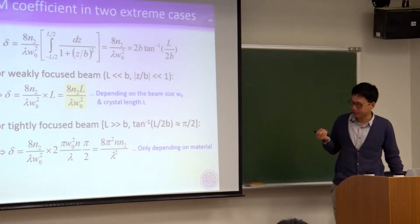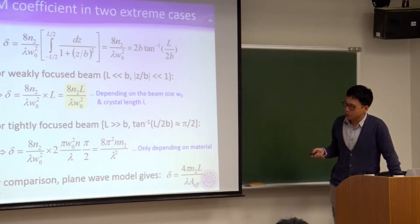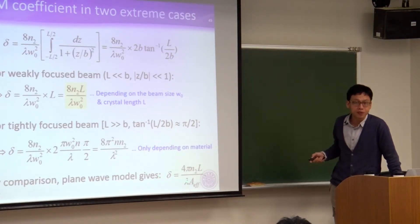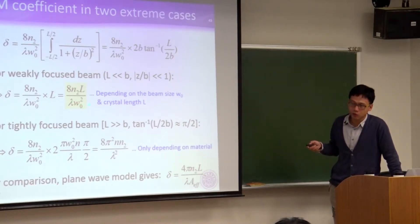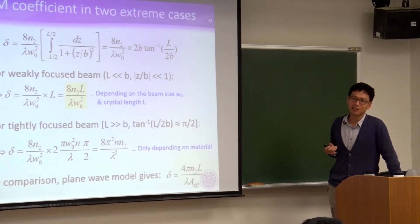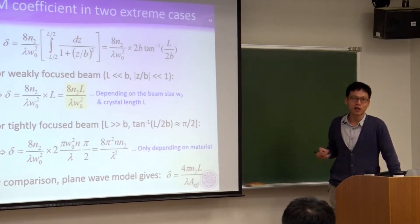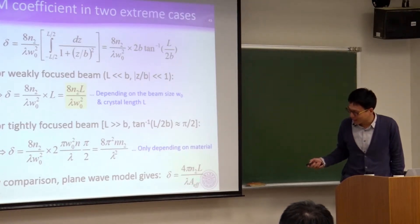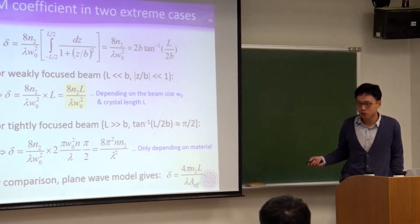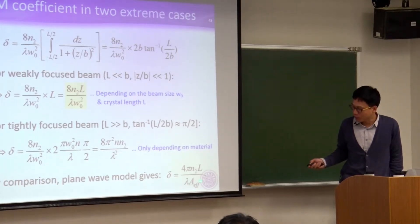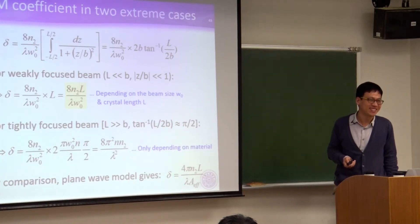By comparison, if you use the simplest plane wave model, you get the SPM coefficient delta in that form. It happens to match the weak focusing case as long as you replace the effective beam cross-sectional area with pi W0 squared over 2 — they are consistent. This tells us you can simply use the plane wave model and substitute pi W0 squared over 2 for the cross-sectional area, without performing integration, and get the same result.